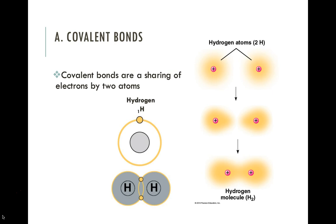Covalent bonds are a chemical bond that results from the sharing of electrons. The atomic core has protons and neutrons, and those protons are positively charged and they attract the negatively charged electrons. Those protons don't really want to give up those electrons — they keep them in their shells. But because electrons are negatively charged and because there are other atoms with positively charged protons, and because electrons like to stay in pairs, we often find the sharing of electrons between two atoms.